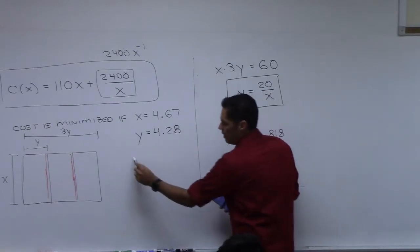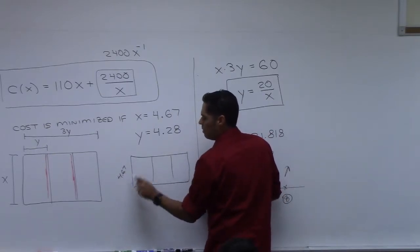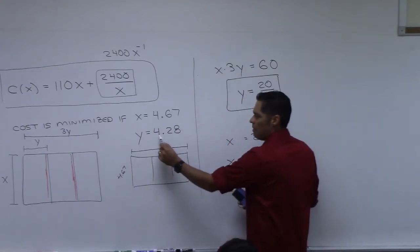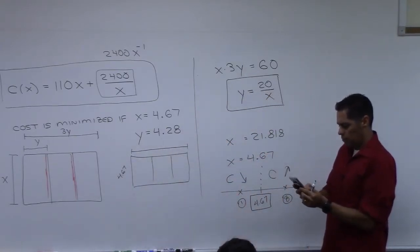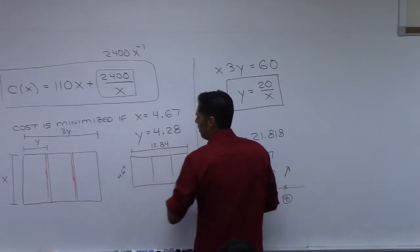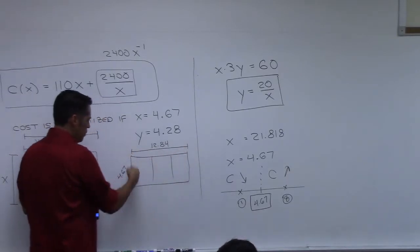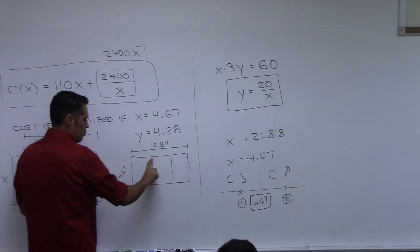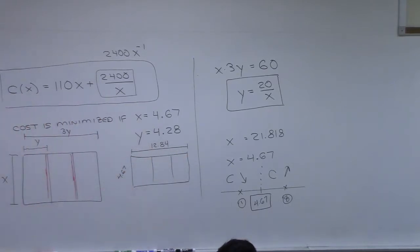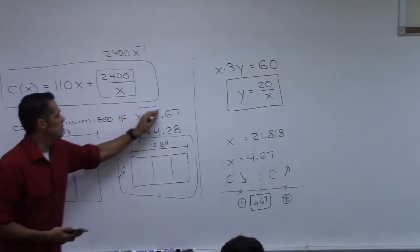So what are the dimensions? This side is 4.67 feet, and the full width from here to here is 4.28 times 3, which is 12.84 feet. So if we build it where this dimension is 12.84 feet and this is 4.67 feet — with wood on part of it and chain link for the rest — we get the minimum cost, and it still has an area of 60 square feet.